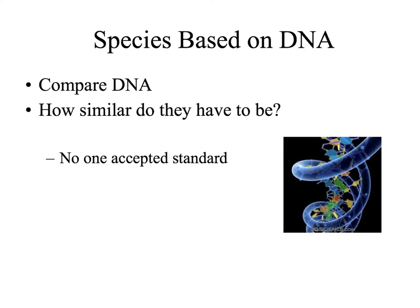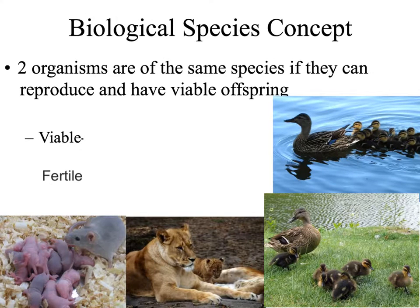Another species concept compares the DNA structure of organisms. This is a newer field and still has many questions to be answered — for example, how different does DNA have to be before we categorize organisms as two separate species? DNA evidence is often used to help support both the morphological species concept and the biological species concept. The biological species concept focuses on reproduction: if two organisms are the same species, they are able to reproduce and have viable, fertile offspring. Viability has to do with the offspring's ability to survive in its environment, while fertility has to do with the offspring's ability to reproduce when it reaches sexual maturity.